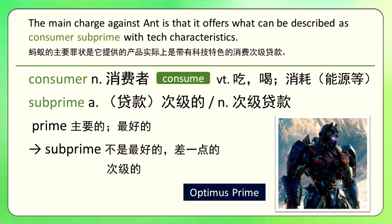Subprime是一个金融上的定义。prime的意思是主要的、最好的，比如变形金刚里面擎天柱叫optimus prime，prime是一种荣誉称号，说明它是变形金刚里面的老大。那subprime呢，sub的意思是次一等的、从属的，所以subprime就是不是最好的，比最好的要差一点，就是次级的。它可以做形容词，就是次级贷款。什么叫次级贷款呢？一般贷款是借给信用比较好的人，那信用不够好的人想借钱怎么办？就有了次级贷款。